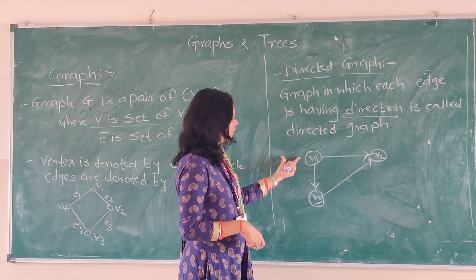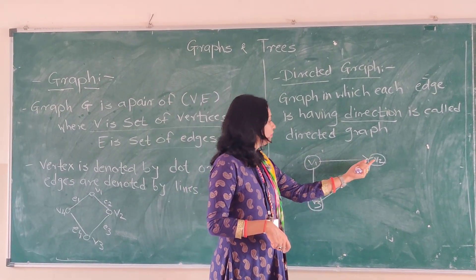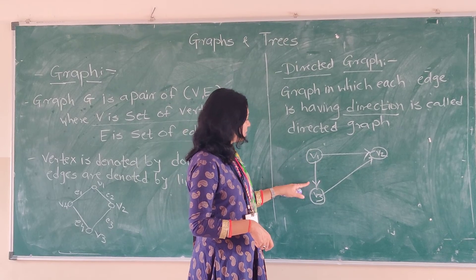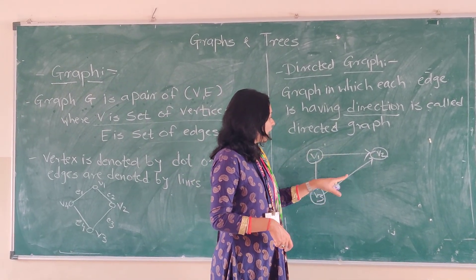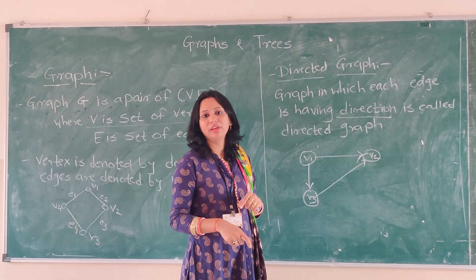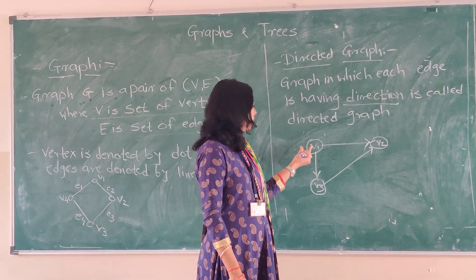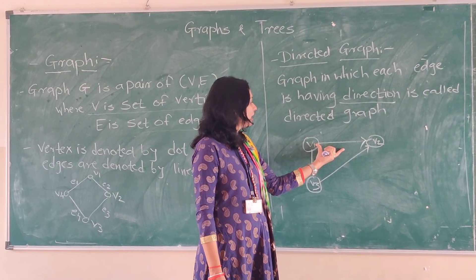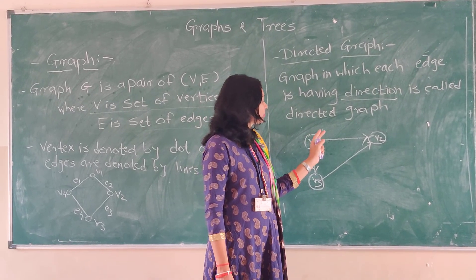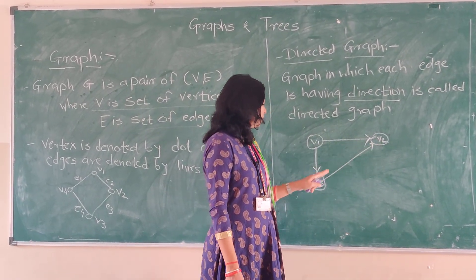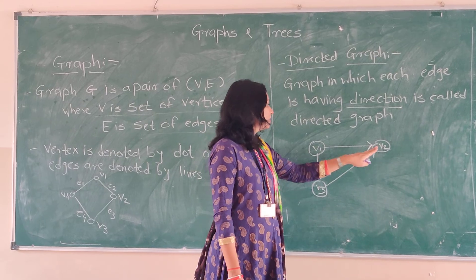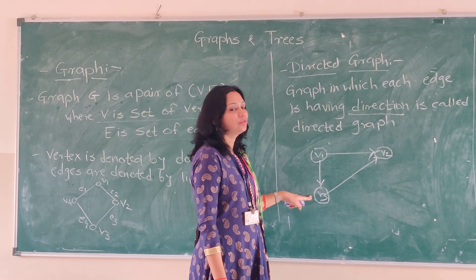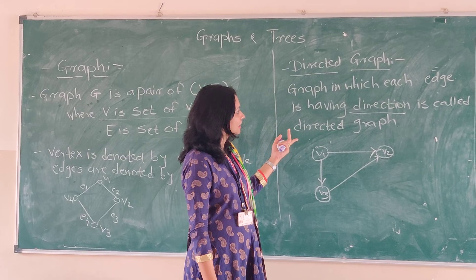We can see over here: V1, V2, V3 are the 3 vertices which are connected by edges, and all edges have a particular direction. V1 to V2 — the directed edge is incident on V2. V3 to V2 — it is incident on V2. V1 to V3 — it is incident on V3. So that is a directed graph.